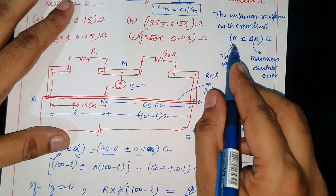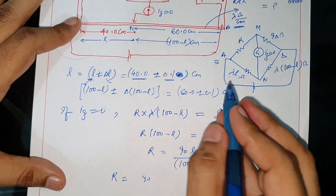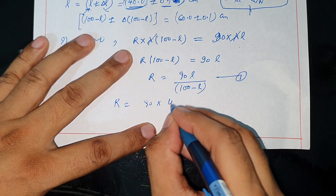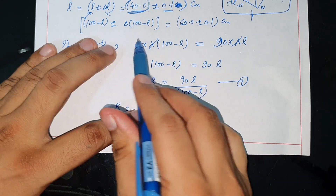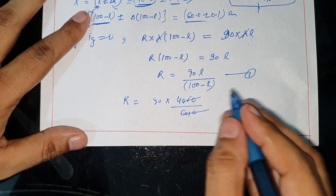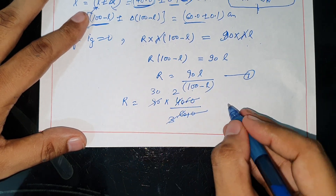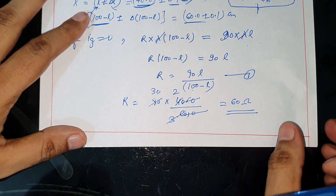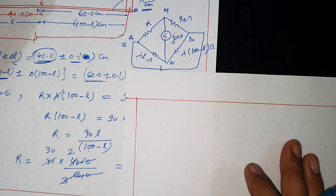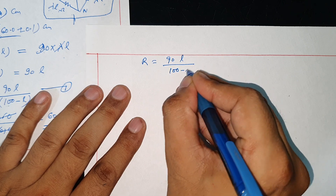The formula gives R equal to 90 times L divided by 100 minus L, which is 90 times 40.0 divided by 60.0. The true value of R is 60.0 ohm. Now we need to find the maximum absolute error. You can do this in two ways: using R equal to 90L over 100 minus L.